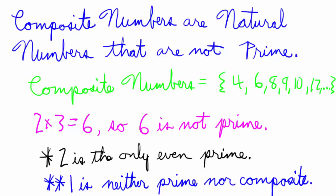Composite numbers are natural numbers that are not prime. So the first few composite numbers are 4, 6, 8, 9, 10, 12, etc.